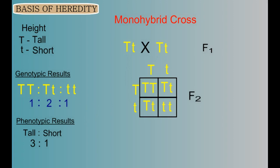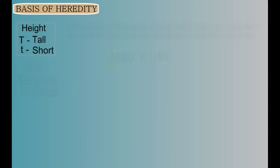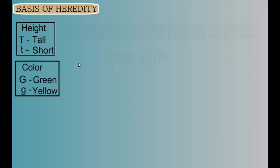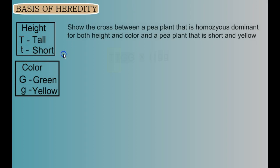So far we've only looked at one trait, but if we look at two traits at the same time we learn another really important piece of information. Let's consider height and color in peas — green color is dominant to yellow color. Let's show a cross between a pea plant that's homozygous dominant for both height and color and a pea plant that is short and yellow. Stop the video and write the genotypes for each parent plant — remember, we are describing two traits, so our genotype must have four letters.